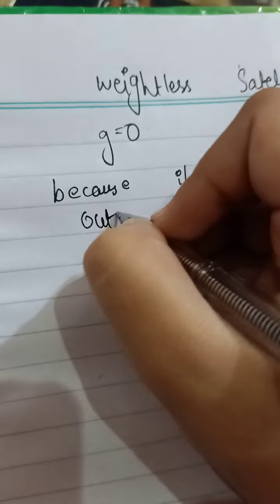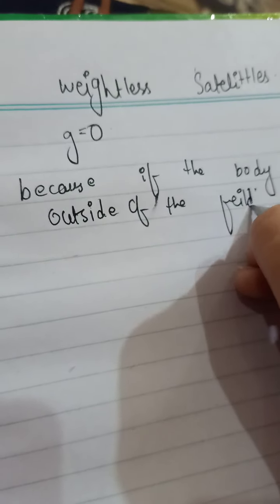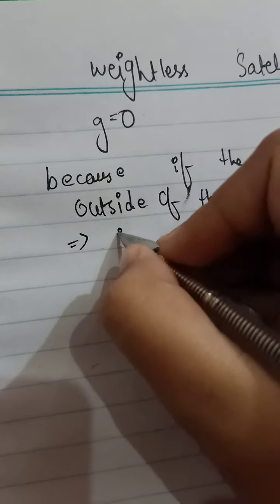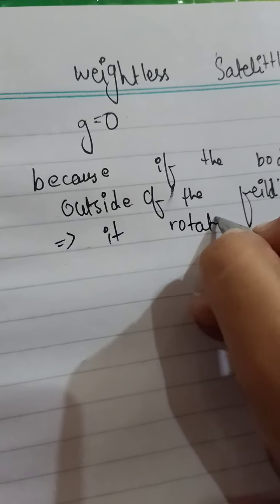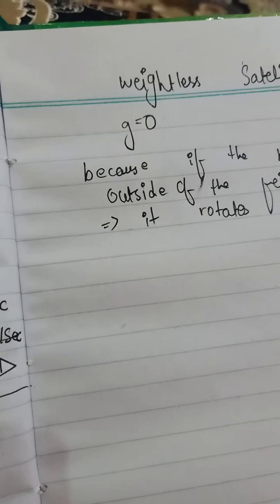Why is gravity zero? Because if the body is outside of the gravitational field, it will have no gravity. It is outside of the Earth and is weightless. The Earth has gravity, but in a satellite there is no gravity, and it always rotates in the orbital, not on Earth — it rotates in orbit which has no gravity.